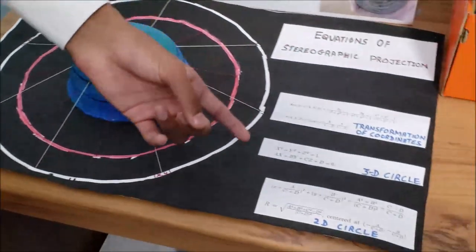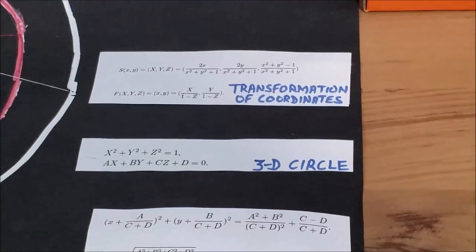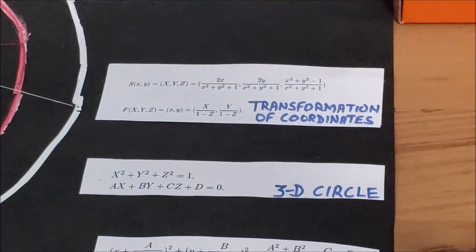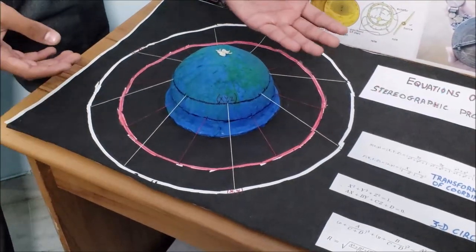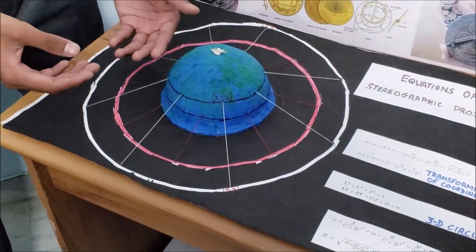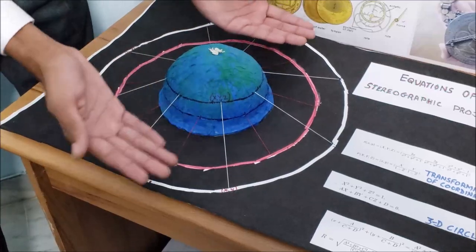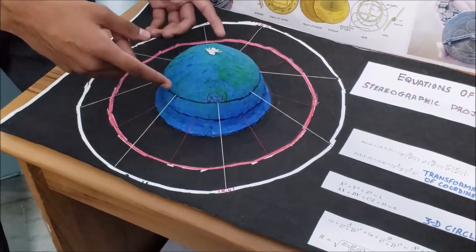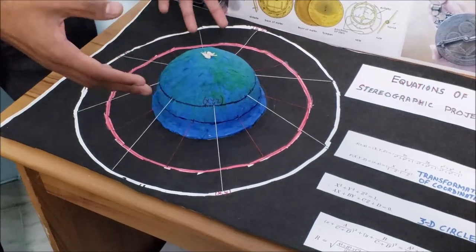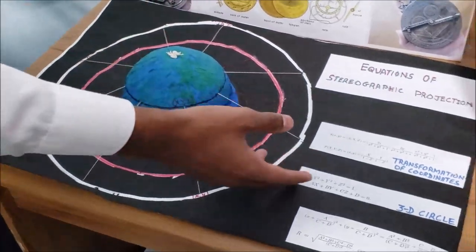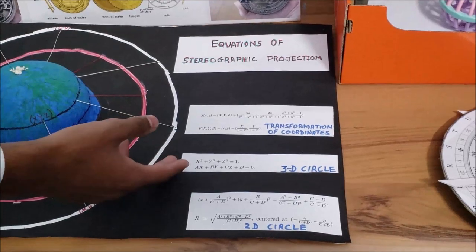Now the second set of equations is the equations for a three-dimensional circle. So if you know the equation of this hemisphere and if you know the equation of a plane that is passing through the hemisphere like so imagine this, you can find out the equation of this small circle that is created because of the intersection and that is essentially what the second set of equations is doing.